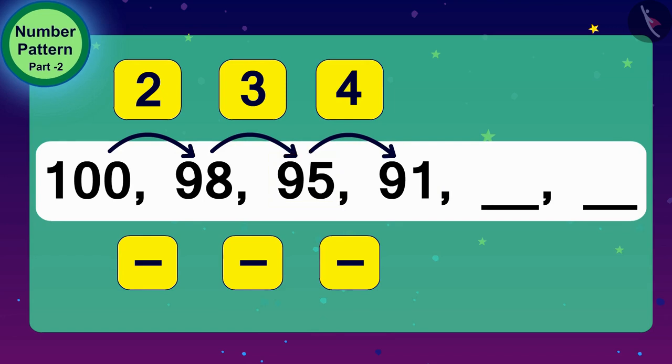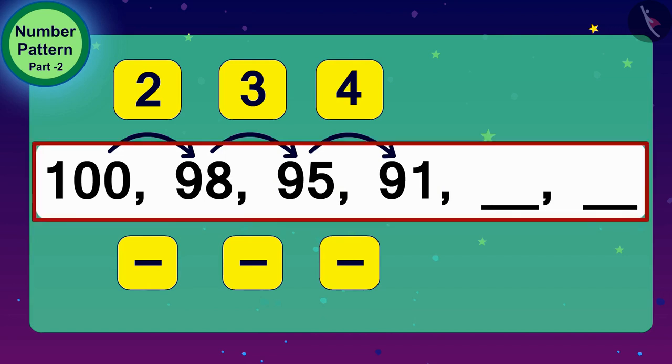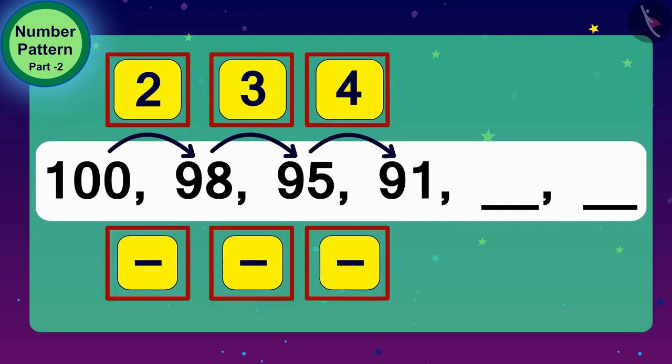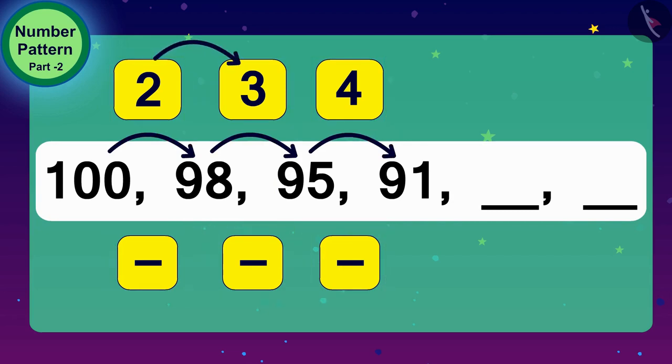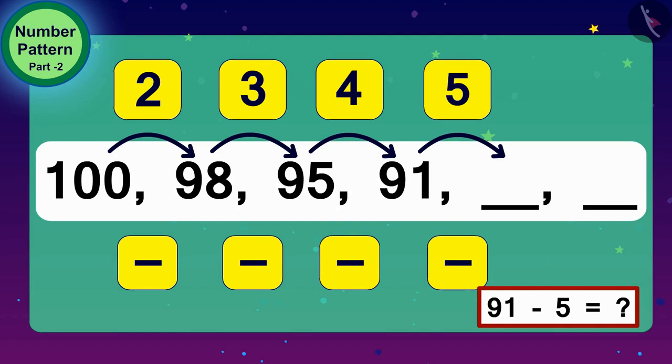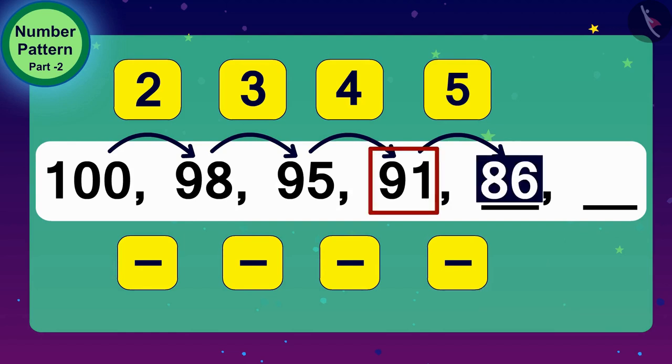Children, here you can see that the number being subtracted every time is increasing by 1 to get the next number. So, the next number in this pattern will be 5 lower than 91 or 86. And what shall we do to get the next number?